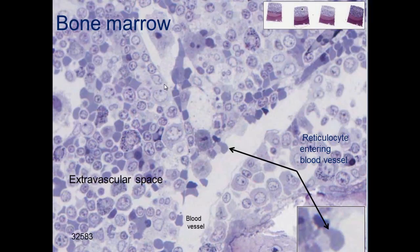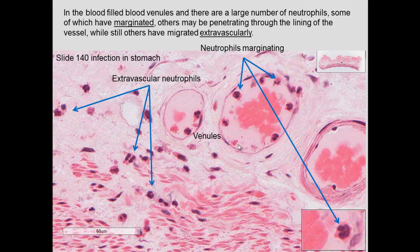Erythropoiesis occurs in the extravascular space of the bone marrow, outside blood vessels. A reticulocyte can be seen squeezing through from the extravascular space into the blood vessel to enter circulation.